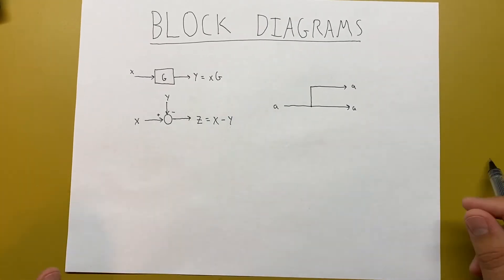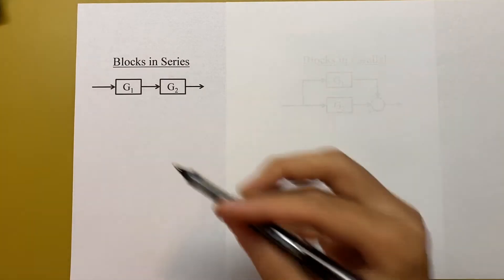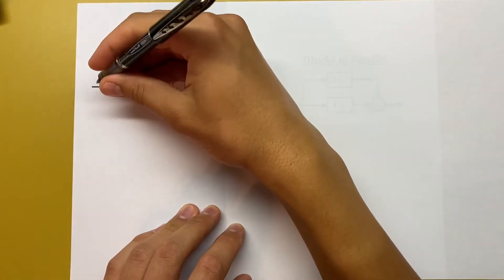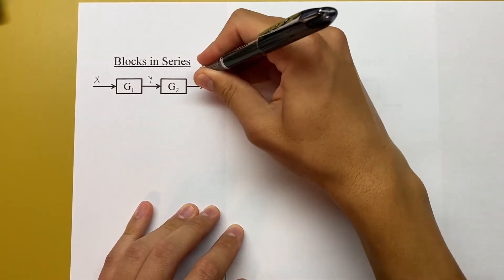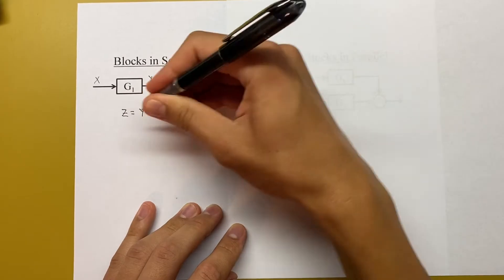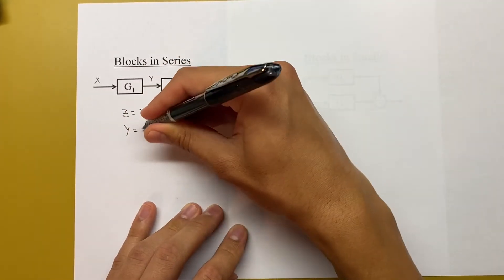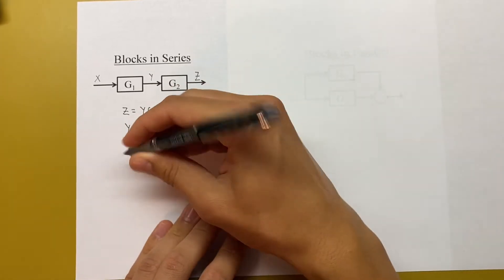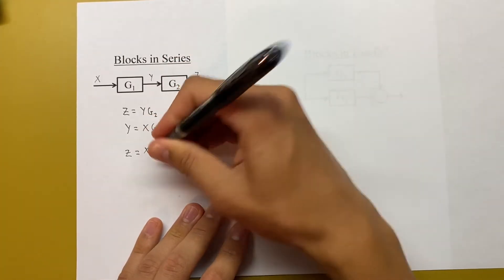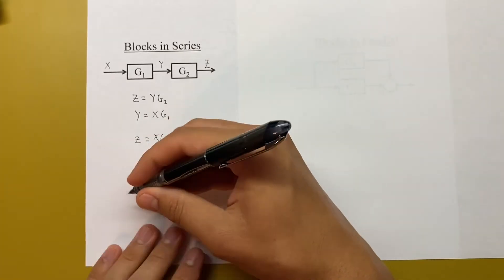With this knowledge, we can derive the rules for block diagram reduction. The first rule is how to combine blocks in series. Here we have two systems in series, G1 and G2. Labeling the signals x, y, and z: we know z equals y times G2, and y equals x times G1. Substituting, z equals x times G1 times G2.